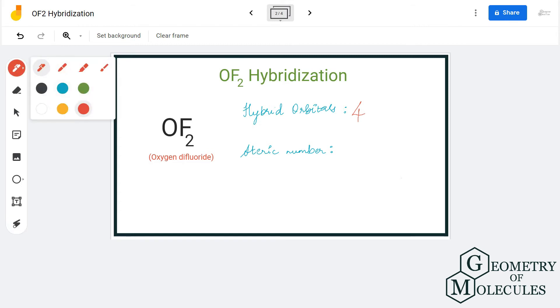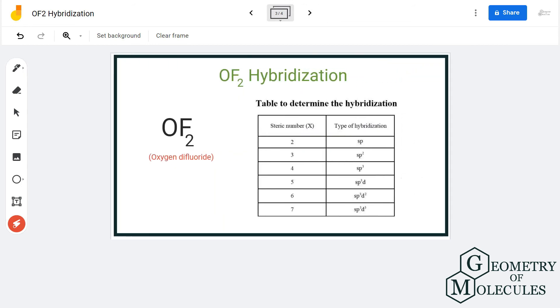You can also use the method of steric number and get the steric number, then refer to the table. Or, if you get the total number of hybrid orbitals, you can still determine the hybridization for the molecule.